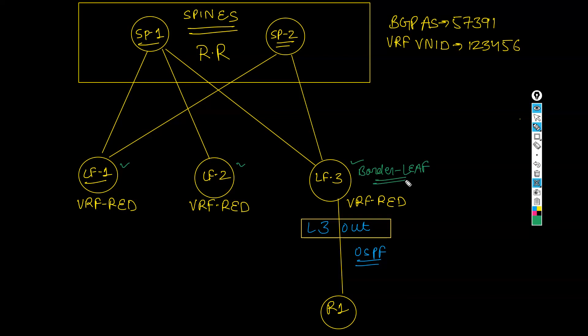In our example we are using VRF red. The BGP AS number is 57391, and the VRF VNID is 123456 for the VRF red that we are running in our network. The same VRF red is also used in our L3 out in this example.